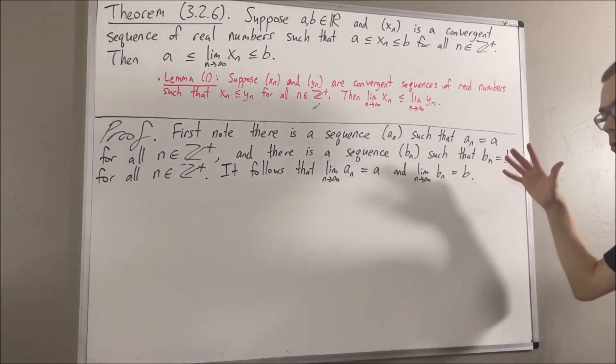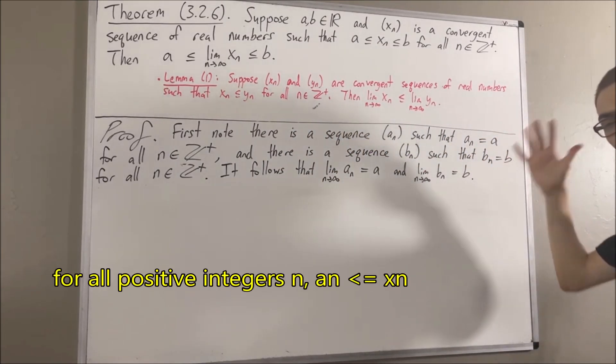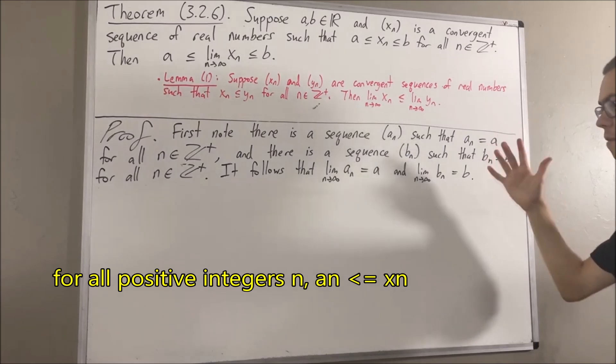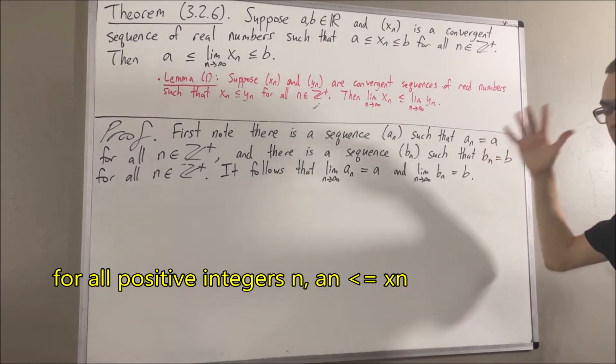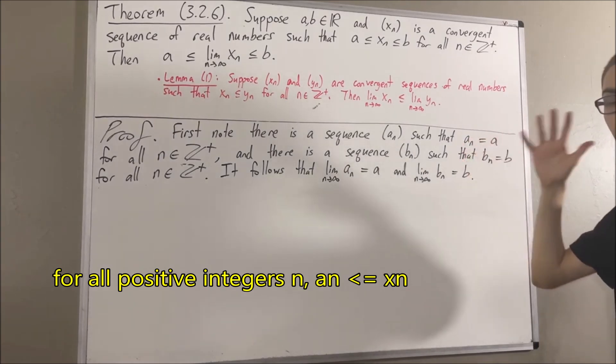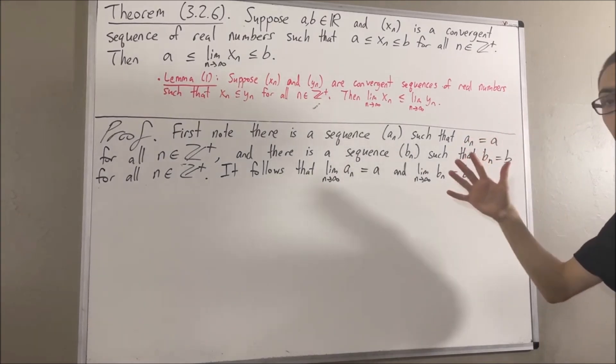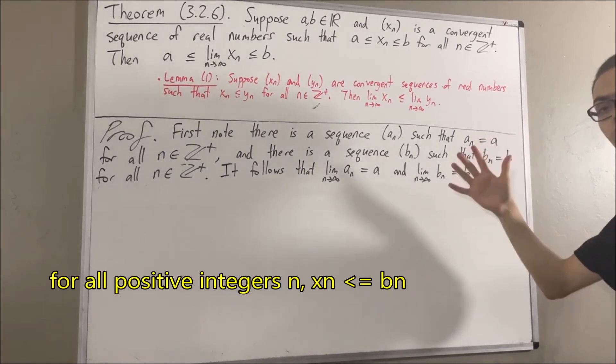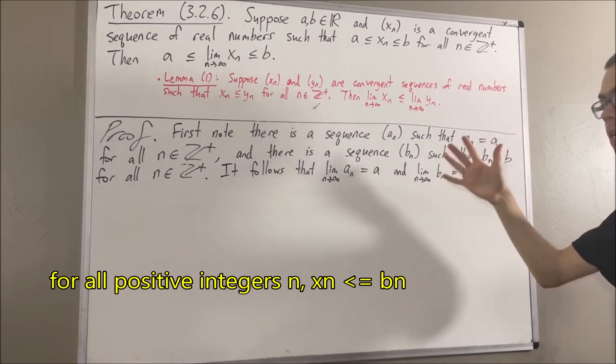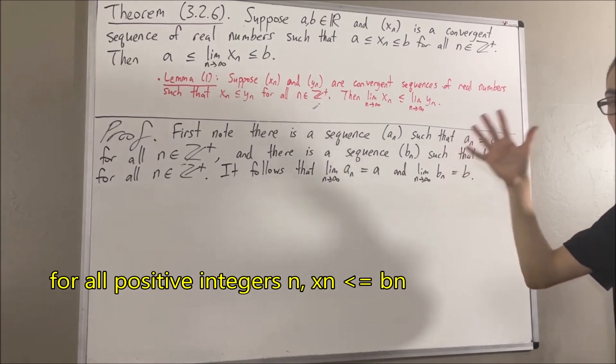And now, we're going to show for all positive integers n, an is less than or equal to xn. And for all positive integers n, xn is less than or equal to bn.